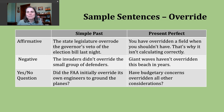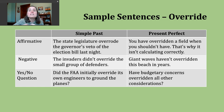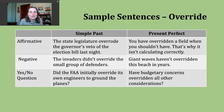You have overridden a field when you shouldn't have — that's why it isn't calculating correctly. You can imagine people at work going through some kind of technical program where something just isn't right, and someone went and broke an automatic control or automatic function. They have overridden it.